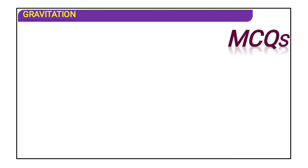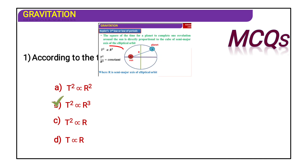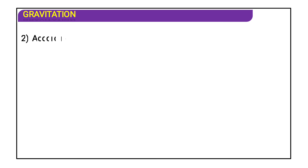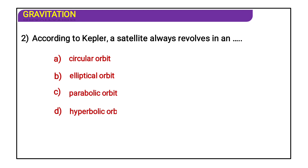MCQ: According to Kepler's third law, T² is directly proportional to — r², r³, or r? The answer is T² is directly proportional to r³. Second MCQ: According to Kepler's law, a satellite always revolves in a — circular orbit, elliptical orbit, parabolic orbit, or hyperbolic orbit? The answer is always an elliptical orbit.